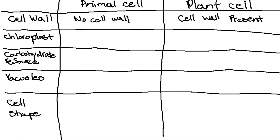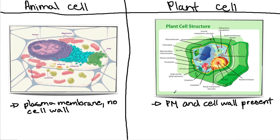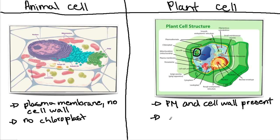Next, chloroplasts. As we can see here, plant cells do have chloroplasts — this is a chloroplast here — and animal cells don't. Chloroplasts are for photosynthesis, so they're really important in plants. Animal cells don't have chloroplasts, whereas plant cells do.